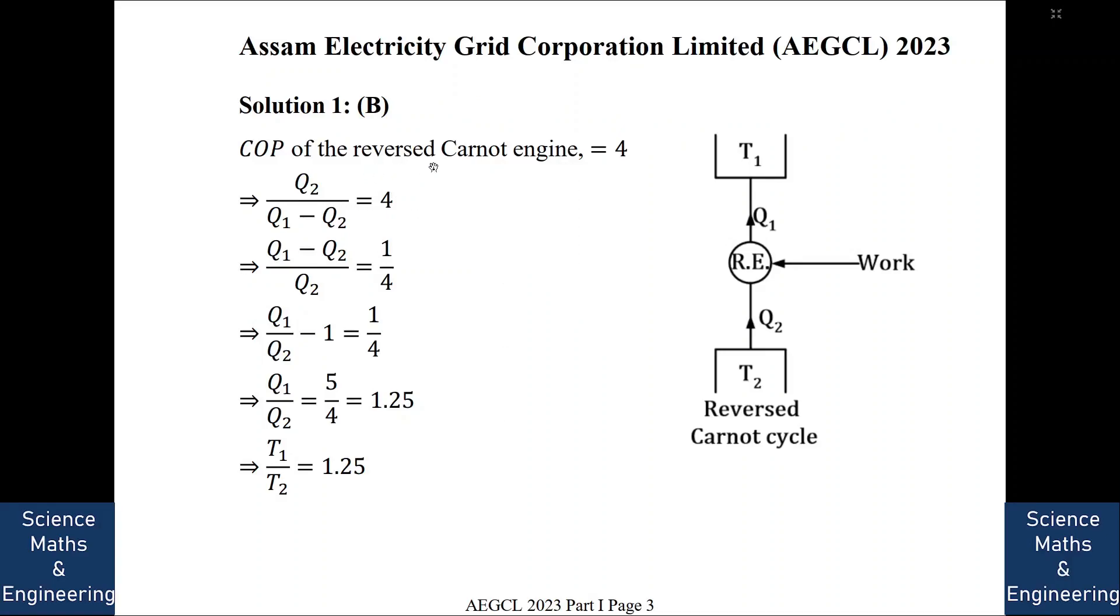So this COP of the reverse Carnot engine is 4. So Q2 divided by Q1 minus Q2, that is the work we can write as Q1 minus Q2 is equal to 4. So Q1 minus Q2 by Q2 would be equal to 1 by 4. So from here we get Q1 by Q2 minus 1 is equal to 1 by 4 or Q1 by Q2 is equal to 5 by 4 which is 1.25.